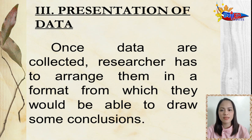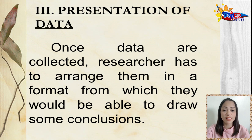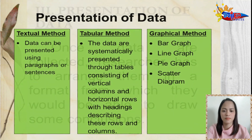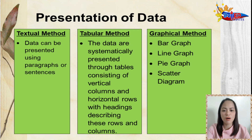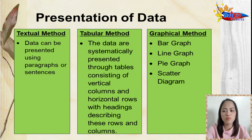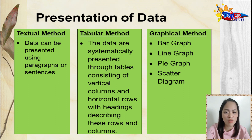The third step for statistical inquiry or investigation is the presentation of data. Once the data are collected, the researcher has to arrange them in a format from which they would be able to draw some conclusions. Data can be presented by means of the following methods: the textual method, tabular method, and graphical method. In the textual method, data can be presented using paragraphs or sentences. It involves enumerating important characteristics, emphasizing significant figures, and identifying important features of data. In the tabular method, data are systematically presented through tables consisting of vertical columns and horizontal rows with headings describing these rows and columns.